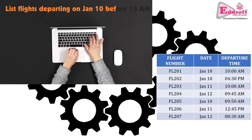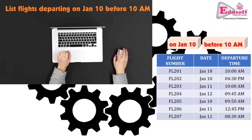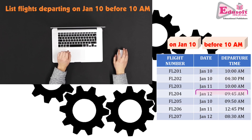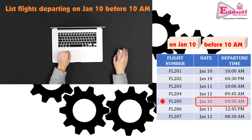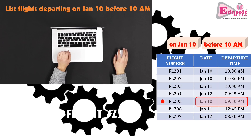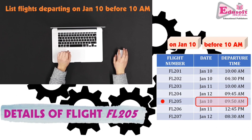When we submit a query into a database through a search engine, here is a simple example: a person is looking for flights departing on January 10 before 10 AM, so he types that query. The two key terms are January 10 and 10 AM. The database table containing all flight details is searched record by record. Matching records are marked and finally the details of flights matching that criteria are listed to the user. This is what happens behind the scenes whenever we submit a query to a search engine or database.